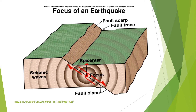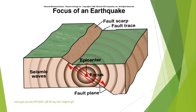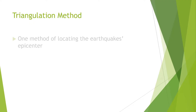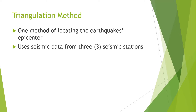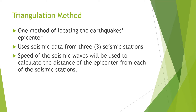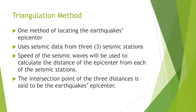So how do we locate the earthquake's epicenter? The triangulation method is one of the techniques we can use. This method requires seismic data from at least three seismic stations — specifically the arrival times of seismic waves recorded by a seismograph. The speed of the seismic waves is used to calculate the distance of the epicenter from each station, and the intersection point of the three distances is the earthquake's epicenter.